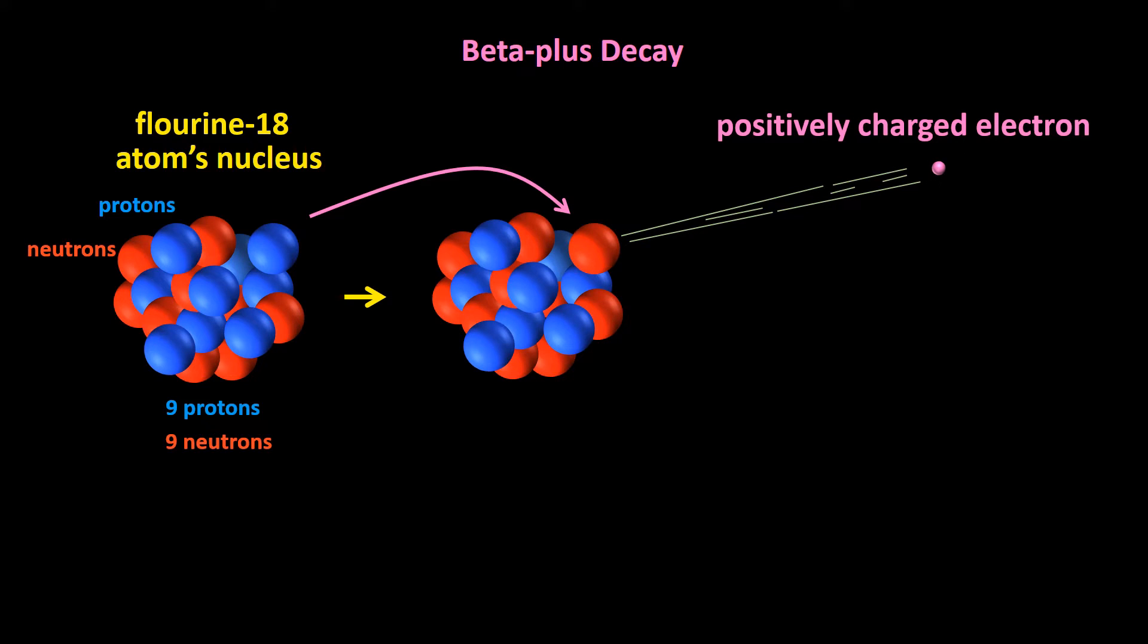This positively charged electron is called a positron, or a beta plus particle, which is often written as beta plus or E plus, E for electron. It is a form of what scientists call antimatter.